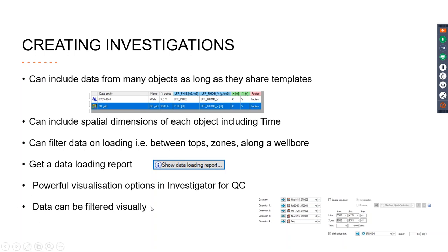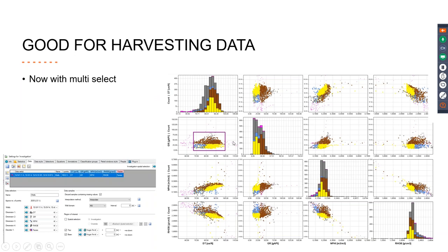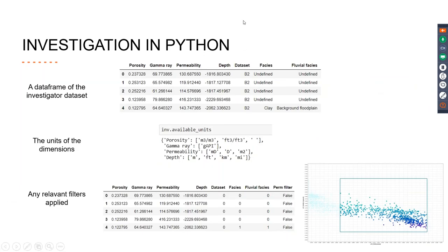The investigator also allows you to filter the data and take that information over. So it looks something like this: you would build a data set, visualize it in the investigator, filter it using the investigator's filters, and then export that to Python. When you read it into Python, you're then presented with the Pandas data frame. It's converting investigations to a Pandas data frame where you get your dimensions, information on the data set, where it came from, the units of the data. Any relevant filters are applied and carried across into Python as well.